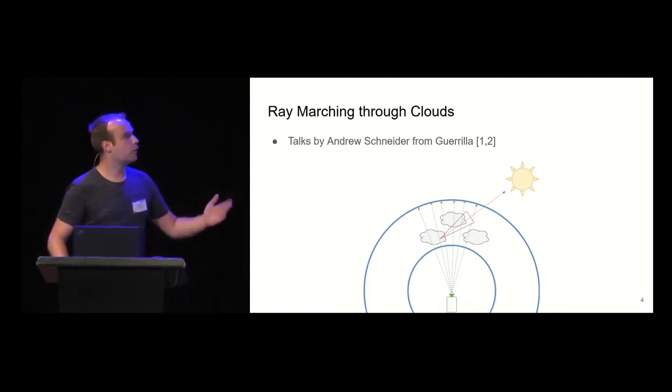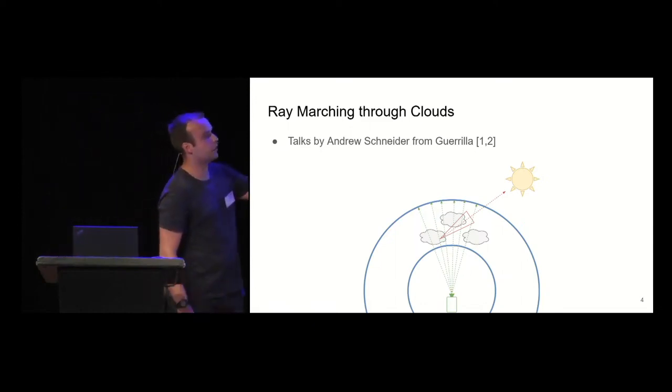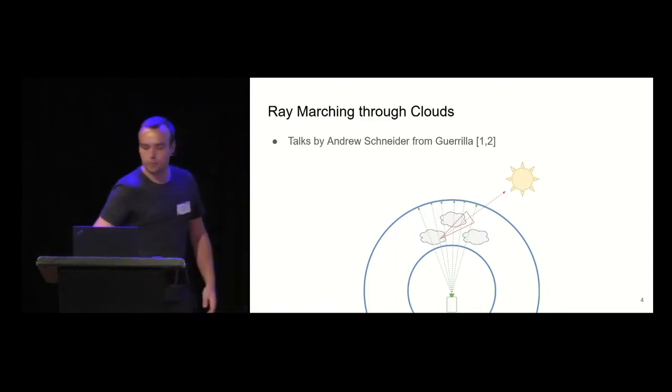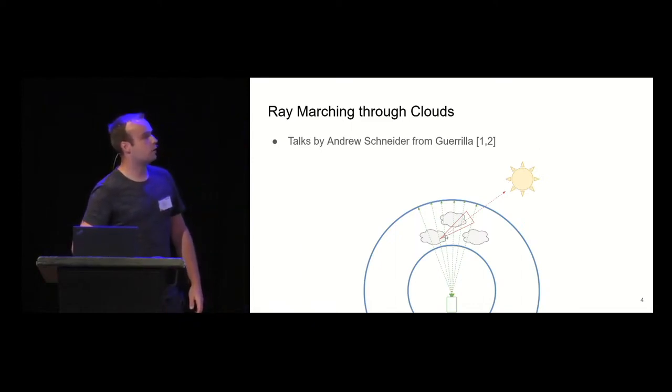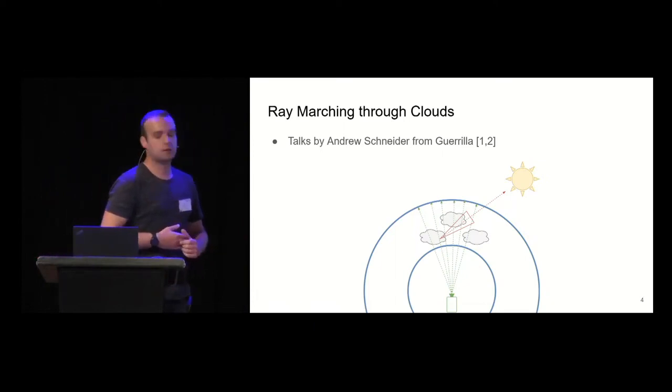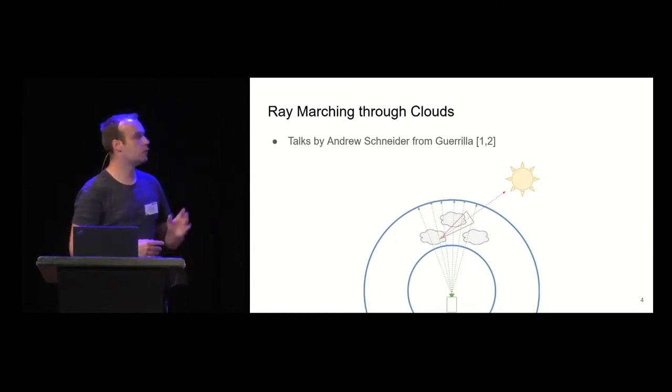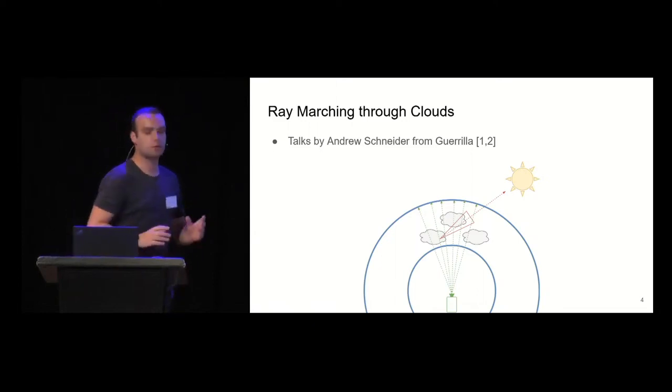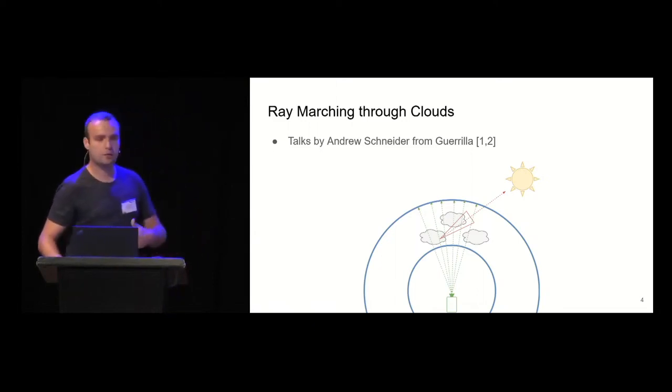During the sampling you also need to ray-march towards the sun to get in-scattering effects. So you have a lot of work to be done because those multiply with your first step sizes, so ray-march based approaches are quite expensive. I recall one number on old generation hardware, so PS4, even at quarter resolution, it still took about two milliseconds for the Horizon game from the talk by Andrew Schneider. This is quite computationally expensive, even on today's hardware.